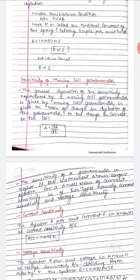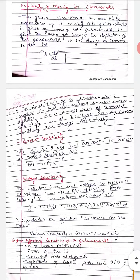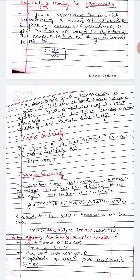Now, sensitivity of the moving coil galvanometer. The sensitivity is defined as the ratio of change in deflection (dθ) to change in current (di). The sensitivity of a galvanometer is higher if the instrument shows a larger deflection for a small value of current.